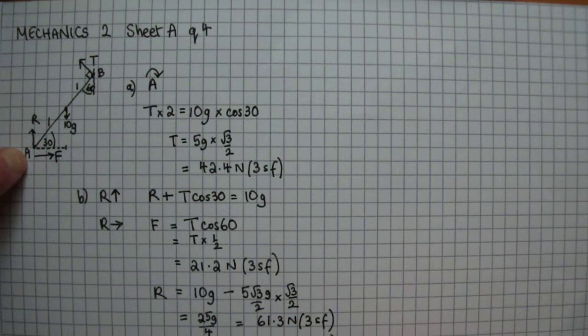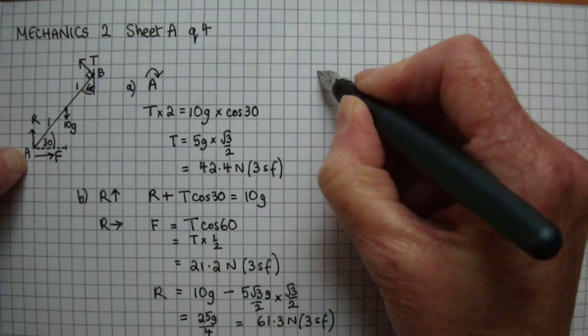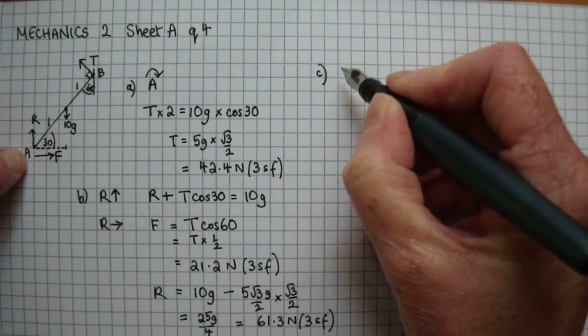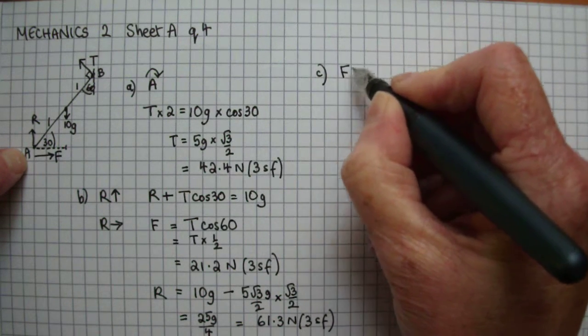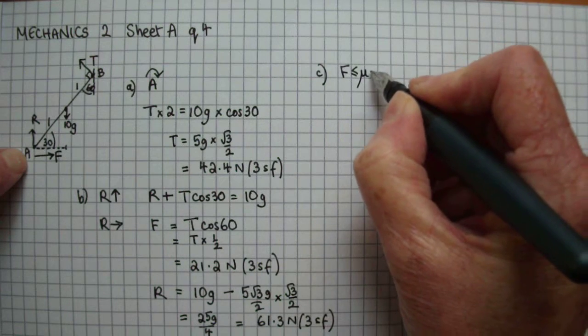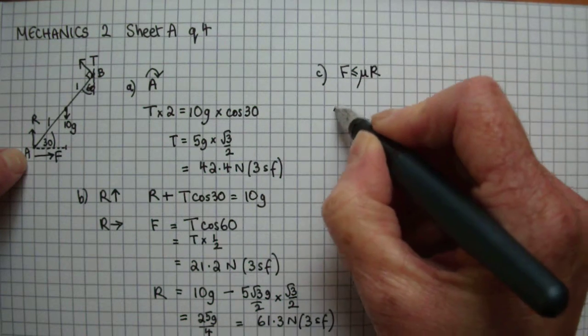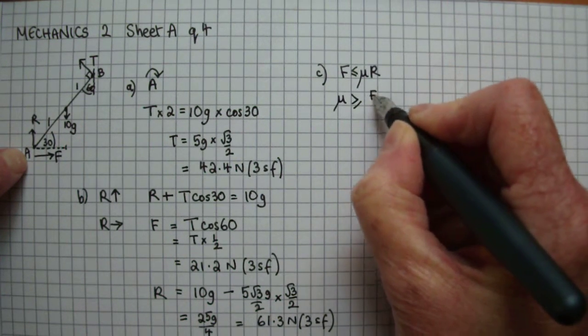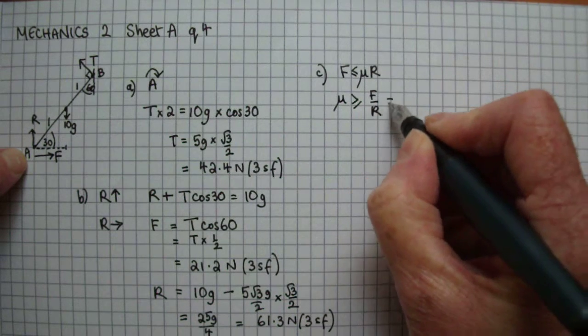Finally, we want to find the range of values for mu. We know that F is less than or equal to mu R, so mu is greater than or equal to F over R, which is of course 5 root 3g over 4 divided by 25g over 4.